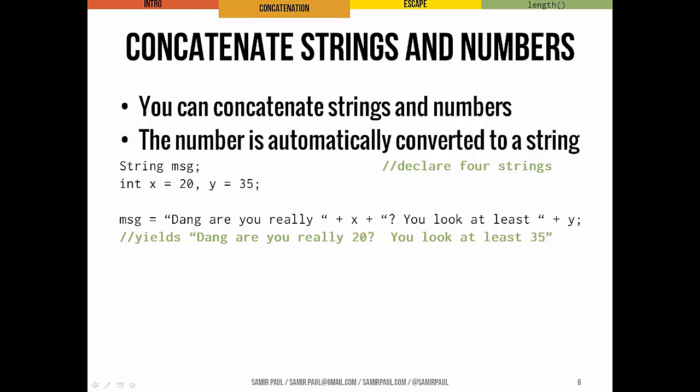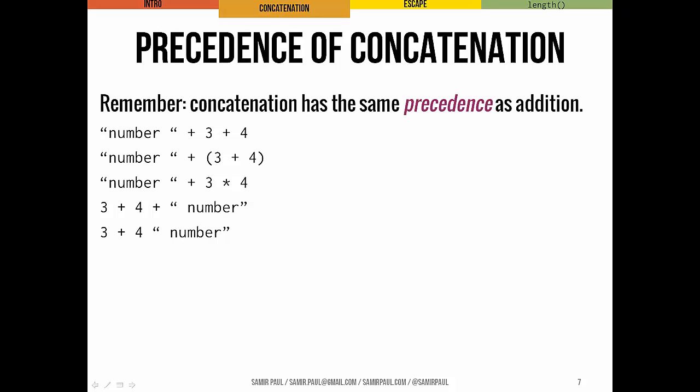You can concatenate strings and numbers as well, and basically what happens is that number is automatically converted to a string once you do the concatenation. So if we have a string message and two variables x and y — 20 and 35 — we can concatenate them in a message like: "Dang, are you really x? You look at least y." That's how numeric variables interact with the concatenation operator when working with strings.